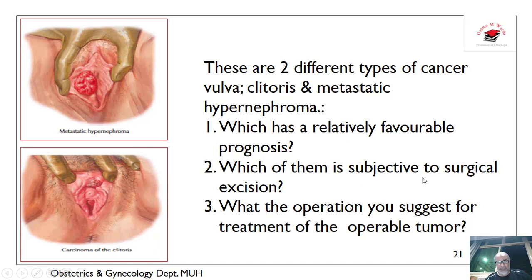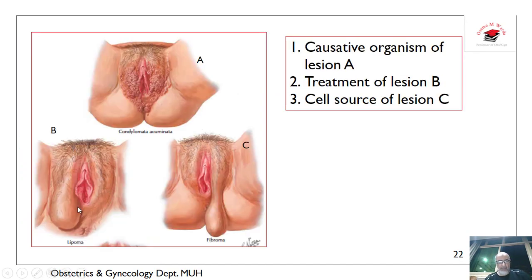Which of them is subject to surgery? Clitoral carcinoma is managed by simple vulvectomy with adjuvant therapy or modified radical vulvectomy according to its stage and size. What about this? This is condyloma acuminata or genital warts; the causative organism is human papillomavirus. This is lipoma; the treatment is surgical excision.